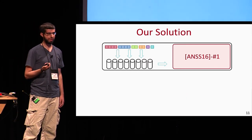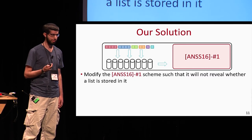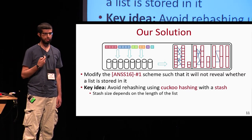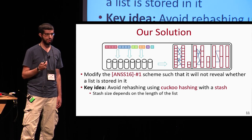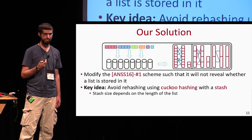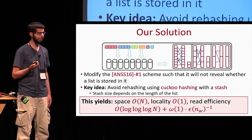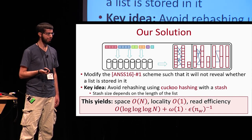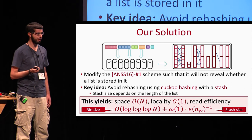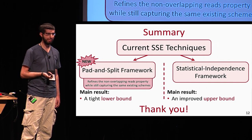Our solution is to modify the scheme of Asharov et al. such that it does not reveal whether a list is stored in it or not. A key idea is to avoid rehashing the hash tables in their scheme by using cuckoo hashing with a stash. Since the stash size depends on the length of the list, our read efficiency depends on the size of the result. This results in an SSE scheme with space O(N), locality O(1), and read efficiency consisting of two terms: one caused by the bin size, and one caused by the stash size. To conclude, here is the summary of our result — thank you for listening.